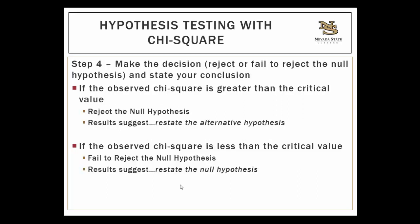Then finally, step four: you make your decision and state your conclusion. If you calculate a large chi-square statistic that exceeds the critical value, you can reject the null and suggest that whatever the alternative hypothesis was is accurate — just restate the alternative hypothesis as your conclusion. If the observed chi-square is less than the critical value, then you're failing to reject the null hypothesis, and you would restate the null hypothesis for your conclusion.